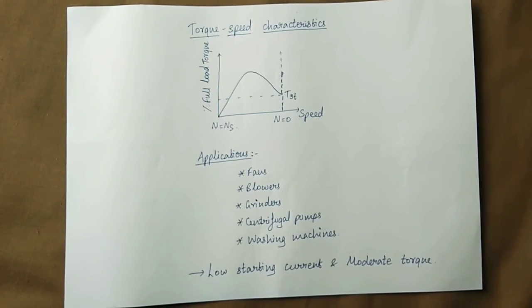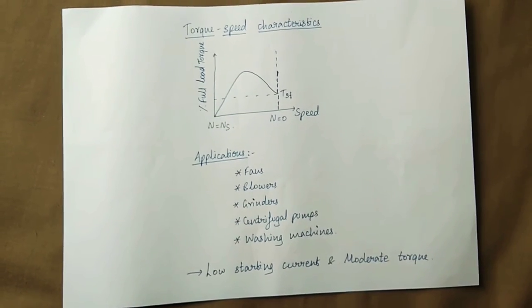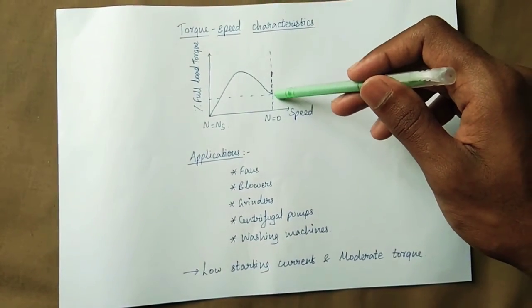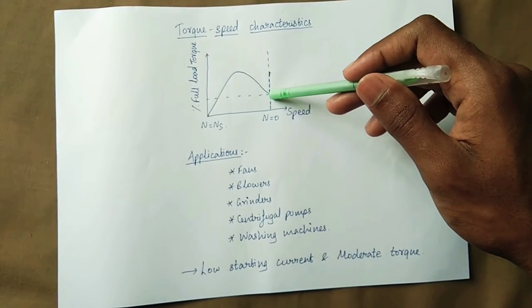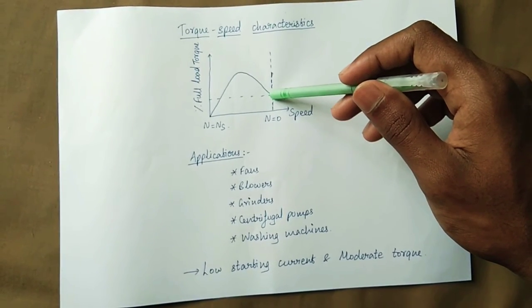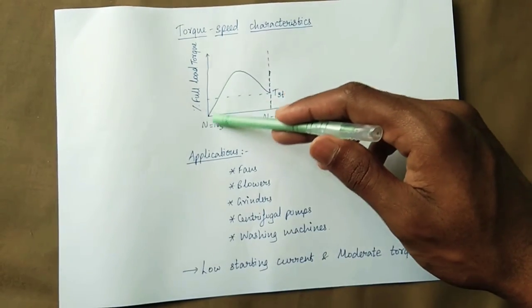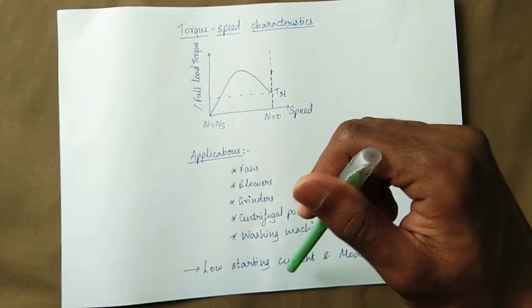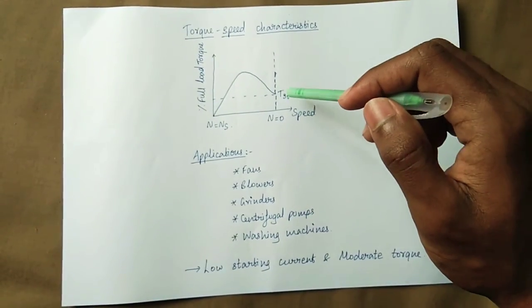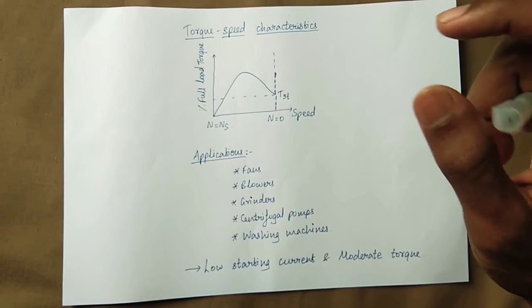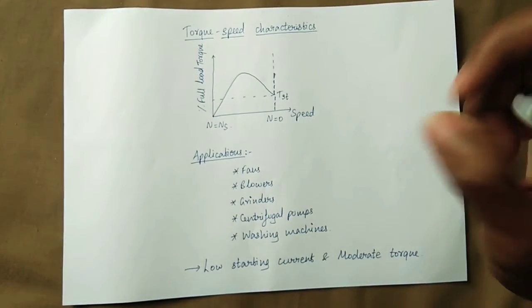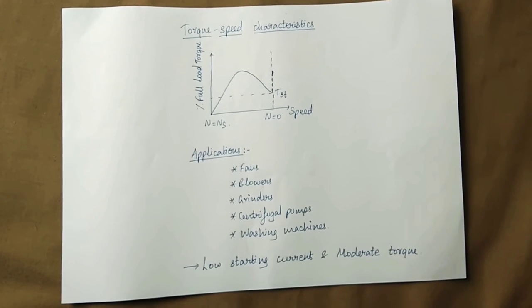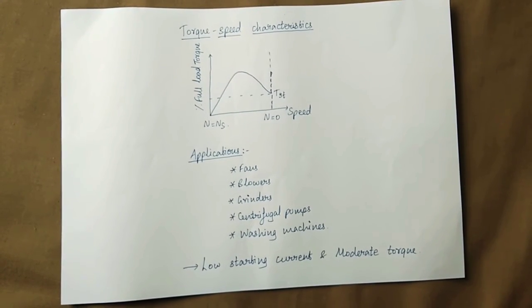This is the torque-speed characteristic of the split-phase induction motor. The starting torque is low. As speed increases, the torque increases up to a point, then the centrifugal switch opens and the starting winding is disconnected. There is a flux that produces starting torque, but there is also a backward-rotating flux that produces a negative torque component.